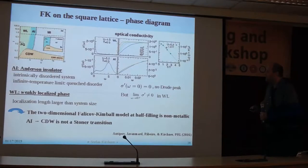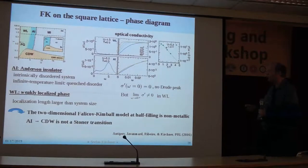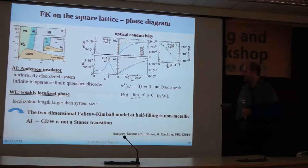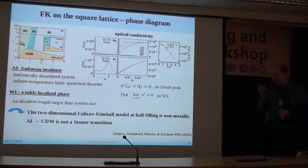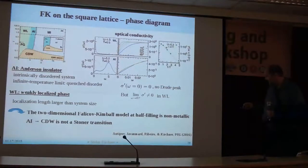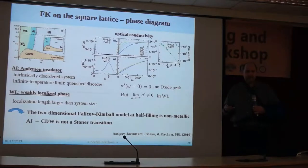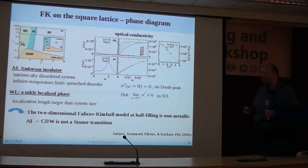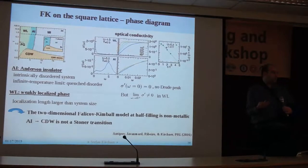I'm showing you the density of states and the IPR for the WL phase, the AI phase, and the Mott insulator. In the Mott insulator, things are easy: the IPR says all the states are localized, it doesn't scale with L, and we have a density of states gapped out. In the AI phase, we have a finite density of states near the Fermi energy, but the IPR tells us these states are actually localized — they are not itinerant. In the WL phase, the system appears metallic with a finite density of states and IPR scaling.